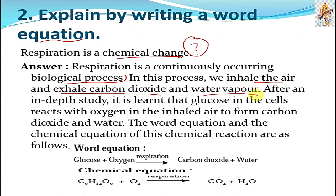After in-depth study it is learned that glucose in the cells reacts with oxygen in the inhaled air to form carbon dioxide and water. Output is what? Carbon dioxide and water. The word equation and the chemical equation of this chemical reaction is given here. You can also find it in your textbook. Glucose which is present in cells due to you eat dinner and lunch. So glucose plus oxygen by all cells do the respiration.